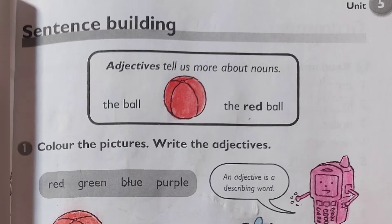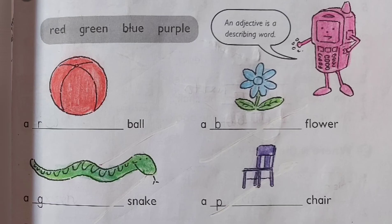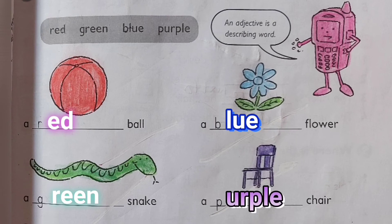Adjectives tell us more about nouns. For example: the red ball — the adjective is red. Number one: color the pictures and write the adjectives. The options given are: red, green, blue, purple. An adjective is a describing word. Let's fill the blanks: a red ball, a blue flower, a green snake, a purple chair.